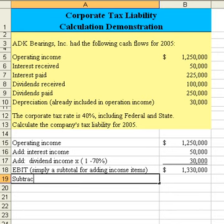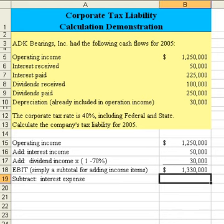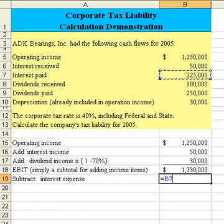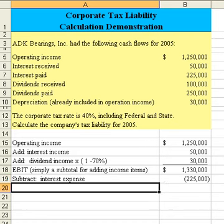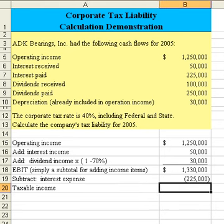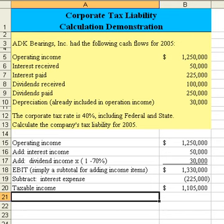Now let's go and subtract interest expense. We do this by looking at the interest that we paid. I want to subtract that, so I'm going to change that formula to a minus. And the result then, if I sum the two above, would be taxable income.